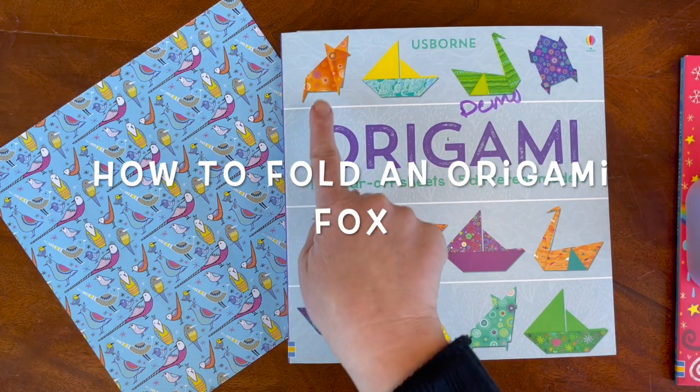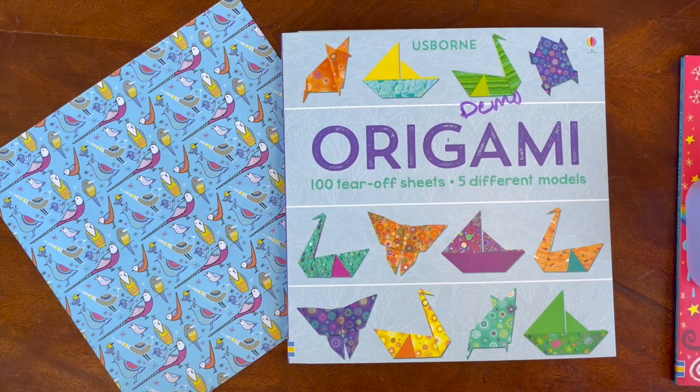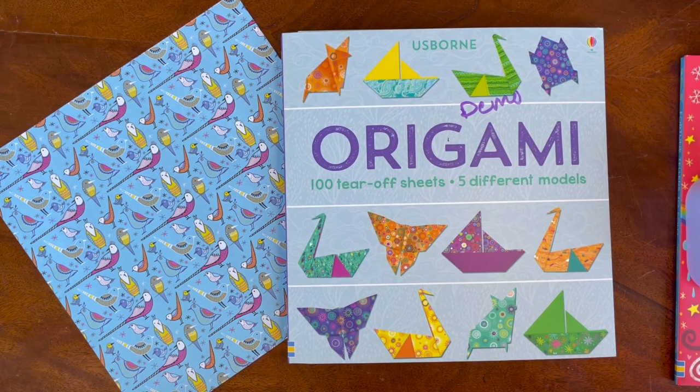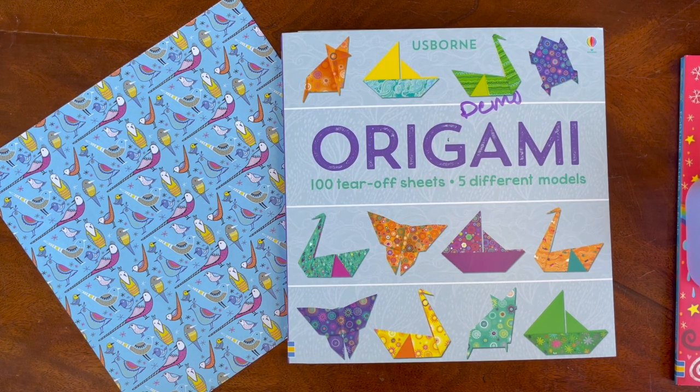In this video I'm going to teach you how to make the fox origami from 100 tear-off sheets origami pad from Usborne. Let's get started.